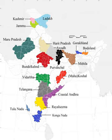Kamtapur lies in the northern parts of West Bengal. The proposed state consists of the districts of Koch Behar, Jalpaiguri, and the southern plains of Darjeeling, including Siliguri city.